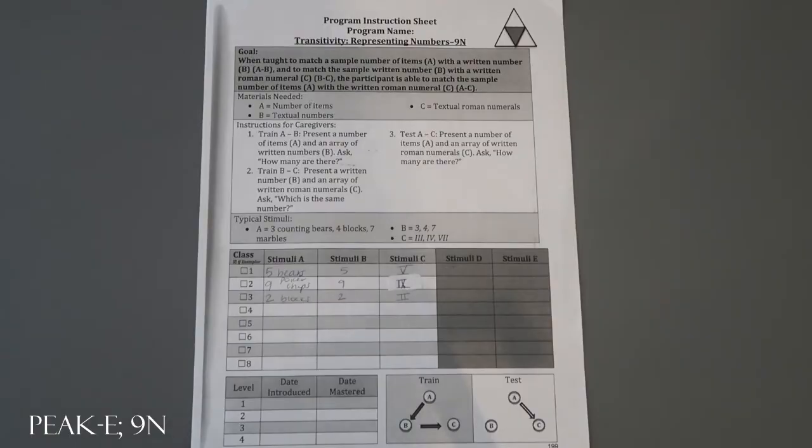I'm going to do a material sample for peak equivalence transitivity representing numbers 9N. For this program, you're going to have three different steps, which means you're going to also have three different blocks for this program.